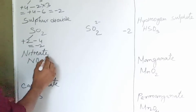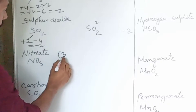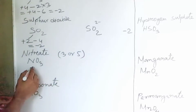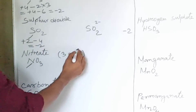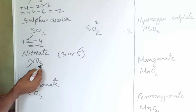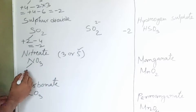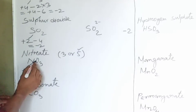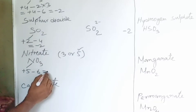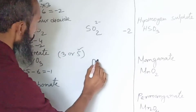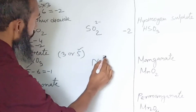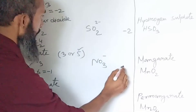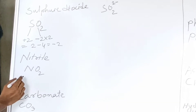Now let's see nitrate. The valency of nitrogen can be either 3 or 5. Here we are going to select 5 because the number of oxygen atoms is maximum. Nitrogen is electropositive, oxygen is electronegative with valency 2. Three atoms of oxygen give 2 times 3 equals 6. So plus 5 minus 6 gives valency minus 1. Its symbol is NO3 1-minus.